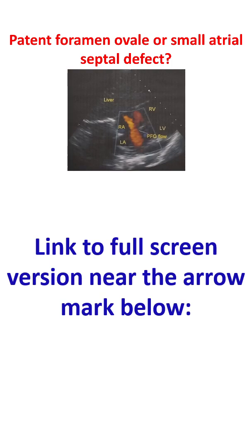If you see an echo dropout in the interatrial septum in the apical four-chamber view, that may be a false dropout. But if you see a dropout in the subcostal view, that will be a true dropout. So we have a defect in the interatrial septum, and we can also see a red color flow here.